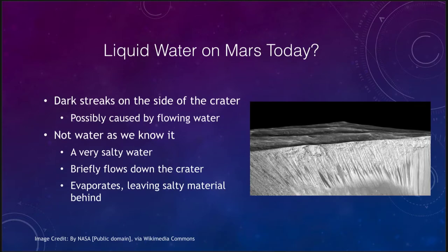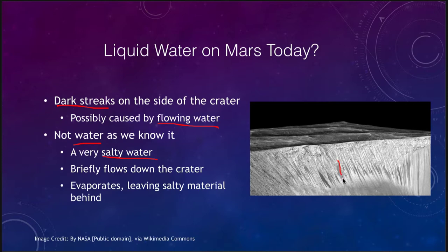Is there any liquid water on Mars today? The quick answer is really no. But there are some possibilities that have been studied recently, such as dark streaks in a crater which were possibly caused by flowing water, formed very recently within a year or so as material was being heated up. However, this is not water as we know it. It is a very salty, briny water that would briefly flow down the crater walls, evaporating very quickly and leaving the salty material behind as deposits. But it is a sign that liquid water of some type at least still flows on Mars today, though nothing like the rivers or floods we saw in previous images.